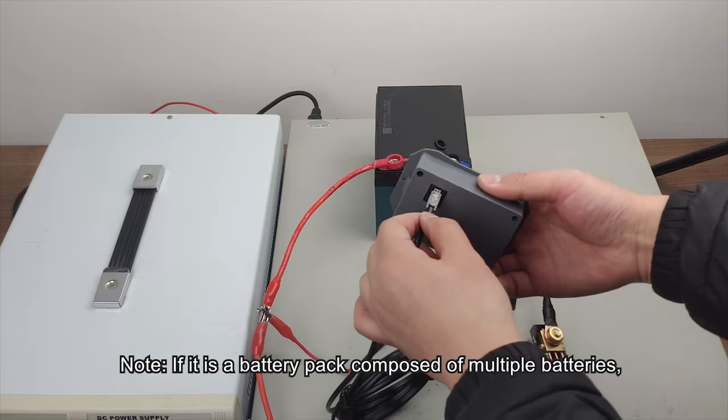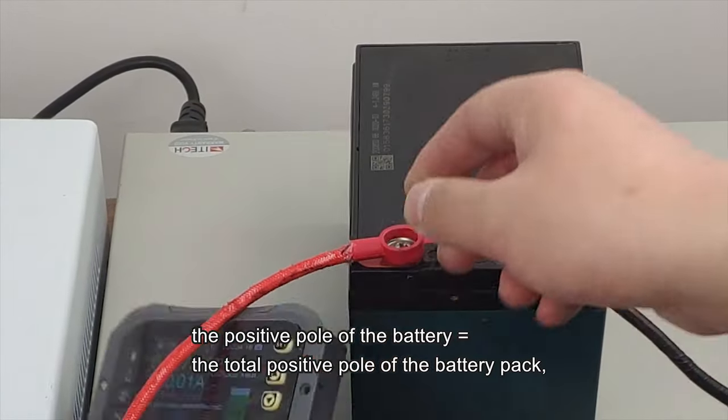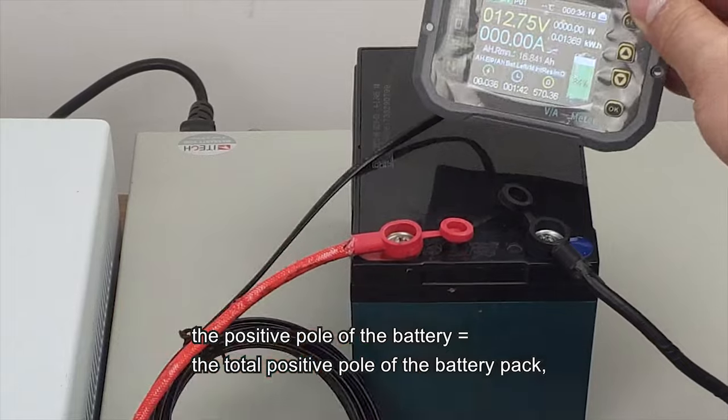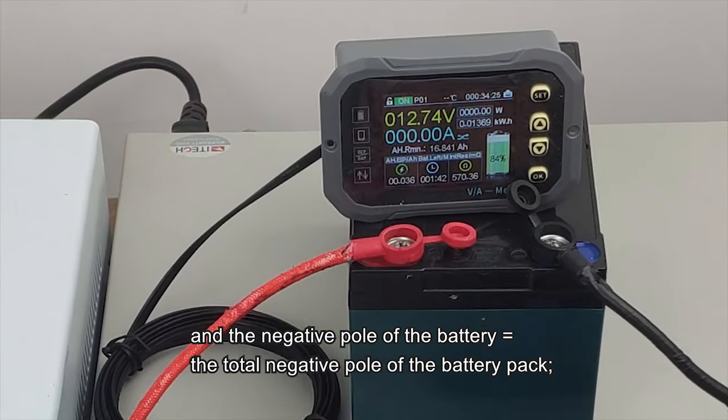Note: If it is a battery pack composed of multiple batteries, the positive pole of the battery equals the total positive pole of the battery pack, and the negative pole of the battery equals the total negative pole of the battery pack.